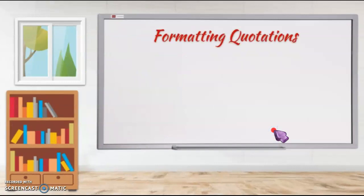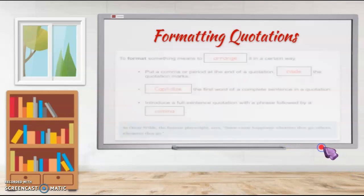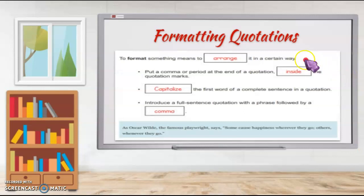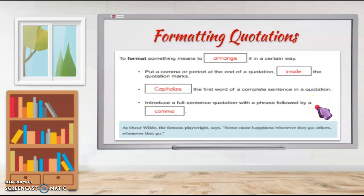Let's talk about properly formatting quotations. To format something means to arrange it in a certain way. We put a comma or period at the end of a quotation inside the quotation marks. You need to capitalize the first word of a complete sentence in a quotation. And you need to introduce a full sentence quotation with a phrase followed by a comma — and notice the emphasis on full sentence quotation.